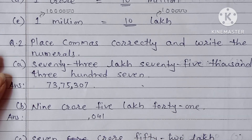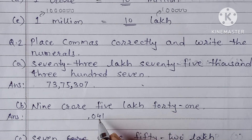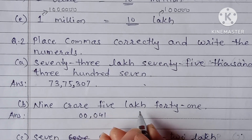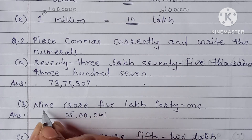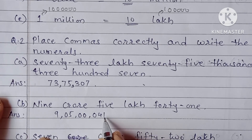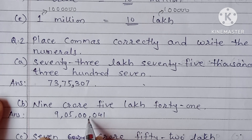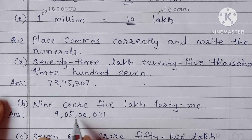Next: 9 crore 5 lakh 41. Writing out the place values: units, tens, hundreds, thousands, ten-thousands, then 5,00,000 for lakh, and 9,00,00,000 for crore. After 3 digits give the comma, then after 2 digits give the comma again. So the answer is 9,05,00,041.